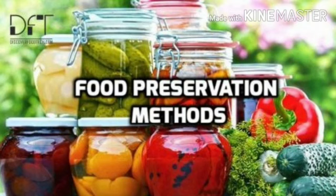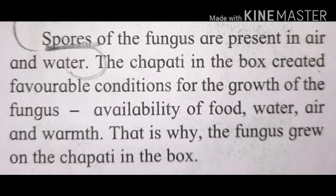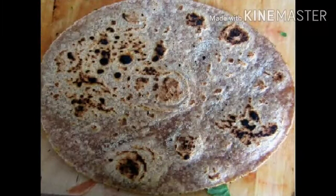First I will read and then explain. Spores of the fungus are present in air and water. The chapati in the box created favorable conditions for the growth of the fungus: availability of food, water, air, and warmth. That is why the fungus grew on the chapati in the box. Students, you all must have tried this activity at home. What was the result?